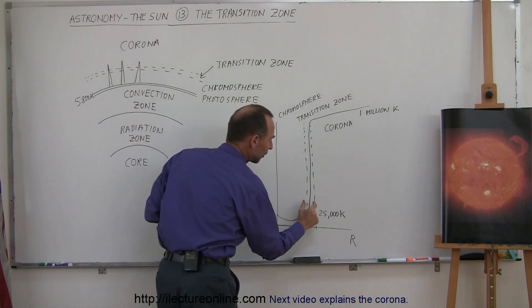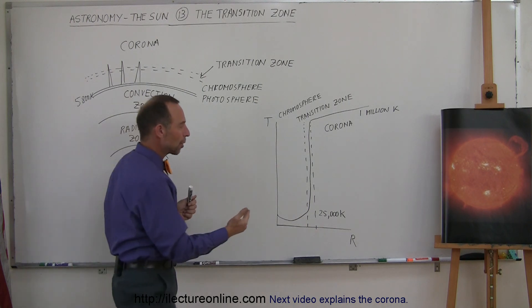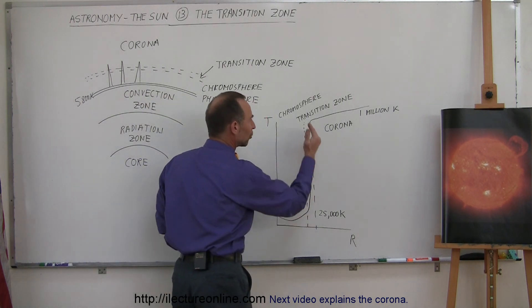So something happens over this very small region of maybe several hundred to several thousand kilometers, where the temperature goes from 25,000 to a million.